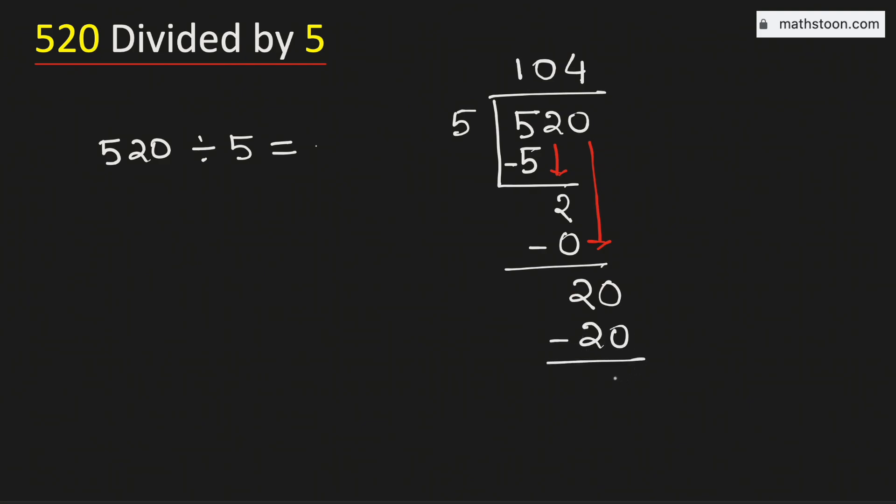Subtract, we get 0. As we have no number to bring down here and we have got the remainder 0, so we will stop. Therefore, 520 divided by 5 is equal to 104. And this is our final answer.